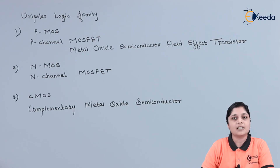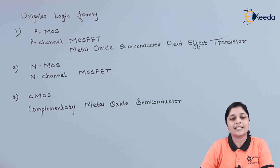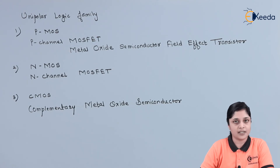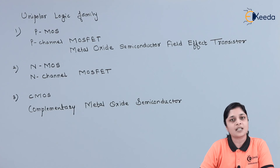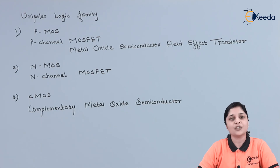In this way, digital ICs are broadly classified. First they are classified into bipolar and unipolar. Bipolar is again classified into saturated and unsaturated. We discussed the logic families under each. Then we discussed unipolar logic families: PMOS, NMOS, and CMOS. This is all about the detailed classification of logic families. Thank you for watching this video — stay tuned with Ikeda and subscribe to Ikeda.